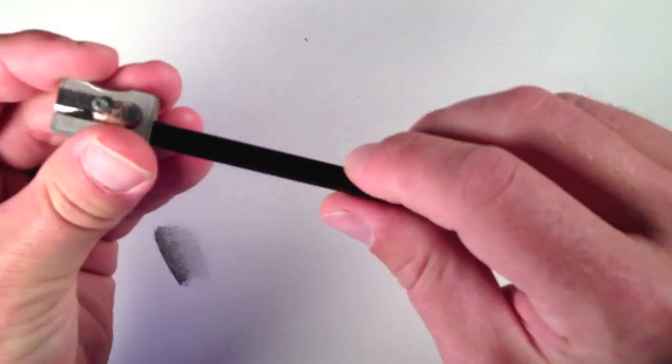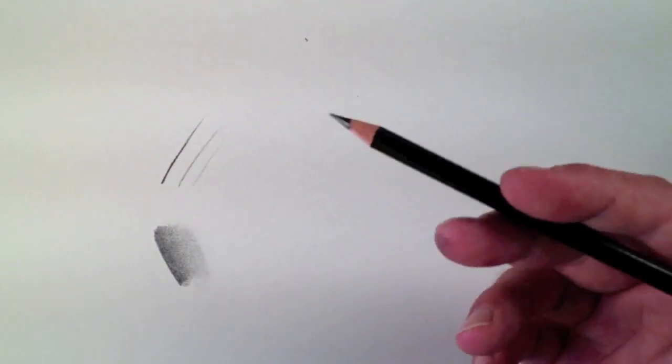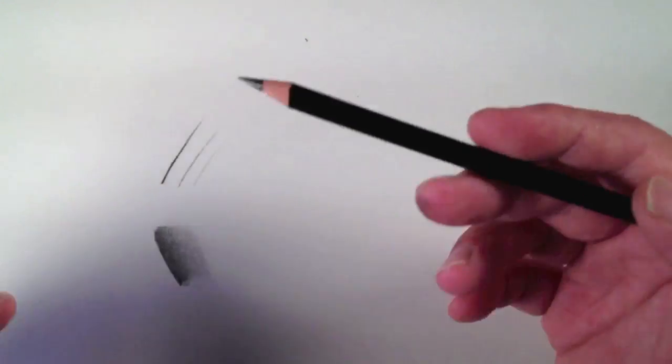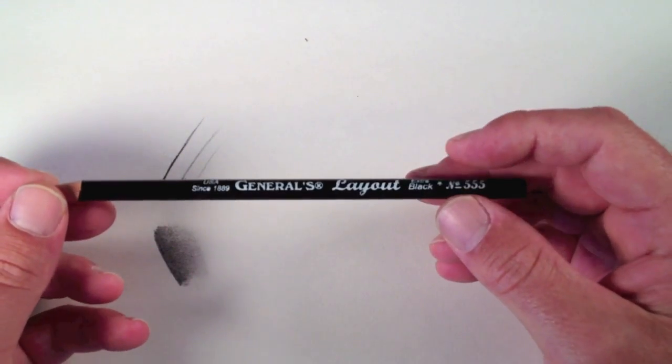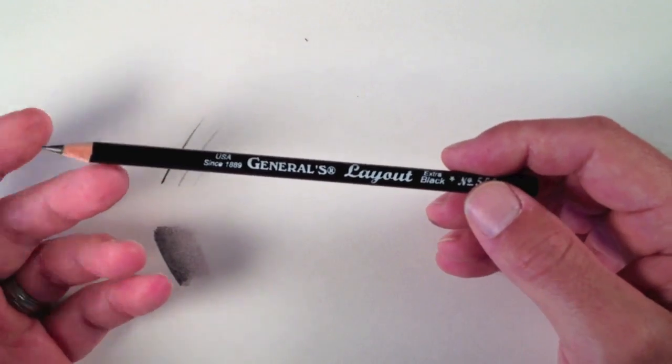Another great feature is that it's easy to sharpen in a standard pencil sharpener. Some drawing pencils are a little too big for that opening, but the General's pencil fits nicely. You can also of course sharpen it with a knife or a blade or an exacto blade or anything that you like to sharpen your pencils with. The best way to show you how great this pencil is is basically to do a quick sketch.